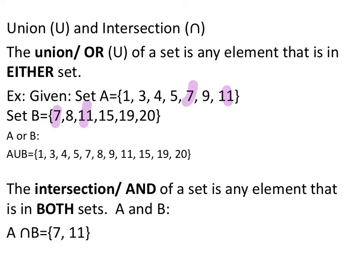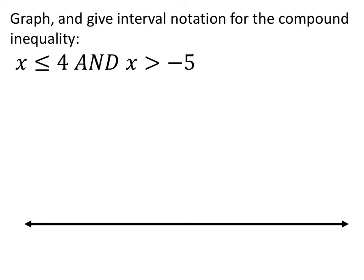For example, 7 and 11 are part of both A and B, which is why it is the set A and B. When we look at intervals or compound inequalities that have 'and' statements, a value needs to be part of one and part of the other as well in order for it to be true. This is really what you'd be graphing and giving interval notation for after you've solved the two inequalities.